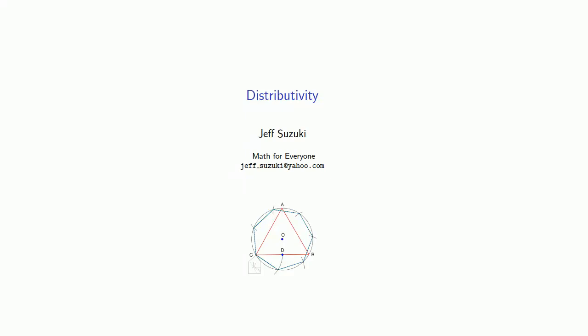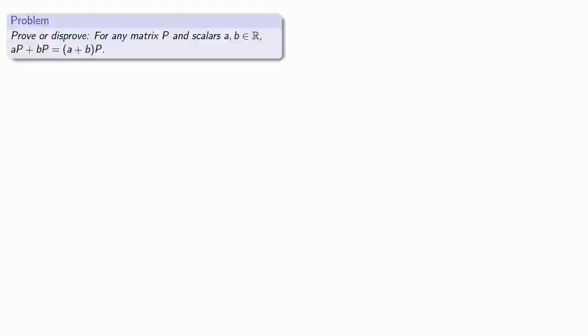What other properties of matrix arithmetic can we discover or prove? Well, how about distributivity? So suppose I have some matrix P and some scalars a and b, both of which we'll assume are real numbers, and we want to prove, or possibly disprove, that aP + bP is equal to (a + b)P.